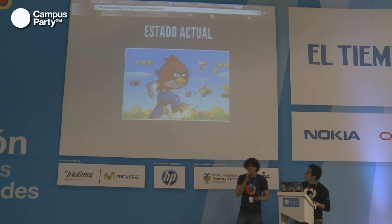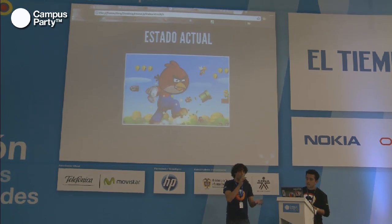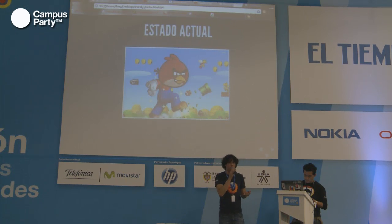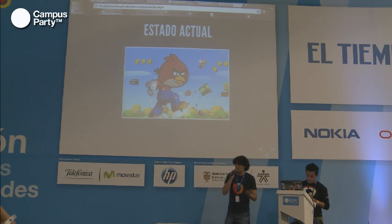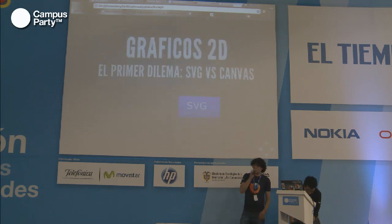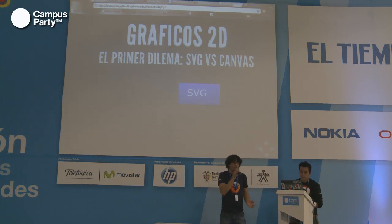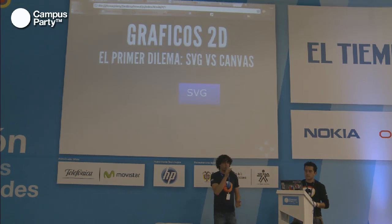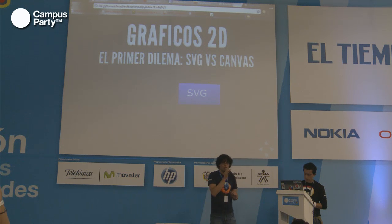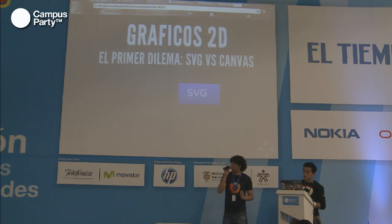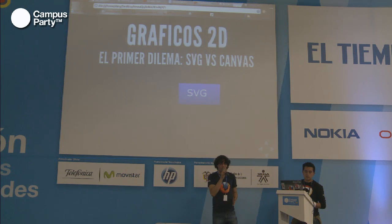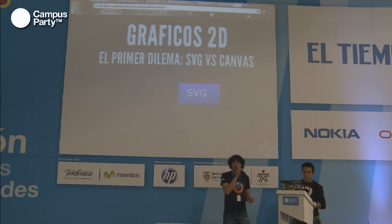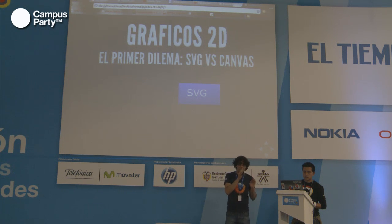El estado actual: ¿qué ofrece HTML5 para desarrollar videojuegos o aplicaciones web? Cuando se empieza a indagar sobre juegos en HTML5, lo primero que uno piensa es: ¿cómo voy a hacer los gráficos? Los gráficos en dos dimensiones son lo más básico que podemos manejar con HTML5 y se dividen en dos partes: SVG y Canvas.